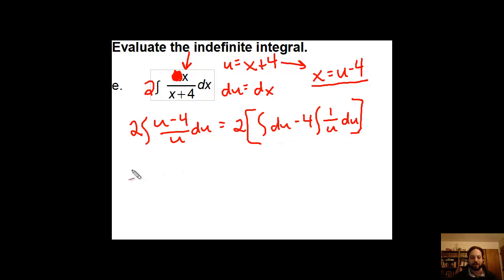Fortunately, both of these I know how to deal with. What I'm going to end up with here, when I integrate du, I'm just going to get u plus c, but I'll add that on at the end. And when I integrate this, I'm just going to get minus 4 natural log of the absolute value of u, and there's my plus c. Can't forget that.